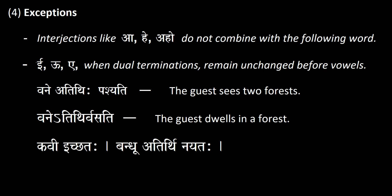The second exception is that the vowels e, u, and ā, when in a dual termination, remain unchanged before following vowels. For example, 'vane' — 'vane' is a dual termination. In 'vane atithi pashyati,' meaning 'the guest sees two forests,' 'vane' is followed by the 'a' in 'atithi.' Normally the final 'a' of 'vane' would be elided, but because 'vane' is part of a dual termination, it stays unchanged.